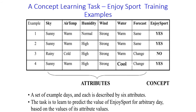The table represents whether a person will enjoy this sport on a particular day or not. In training sample one, the sky is sunny, air temperature is warm, humidity is normal, wind is strong, water is warm, and forecast is same — in this condition the person will enjoy this sport. In the third row, the sky is rainy, air temperature is cold, humidity is high, wind is strong, water is warm, and forecast is same — in this condition the person won't enjoy this sport.